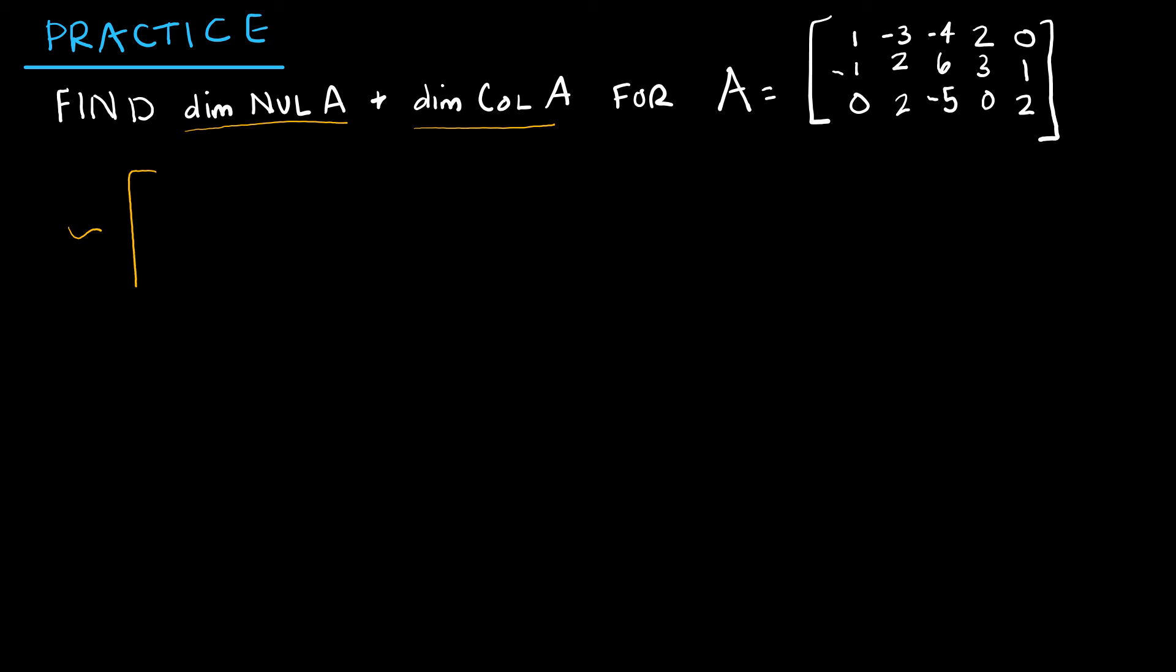Again, all I'm going to do is do my row operations. So I'm going to keep my first row the same. And my second row, I'm going to add rows 1 and 2 together to get 0, negative 1, positive 2, 5, and positive 1. And this guy already has a 0, so I'm not going to do anything to row 3 quite yet. So I know that's a pivot. So now let's continue.